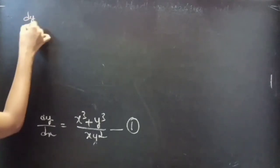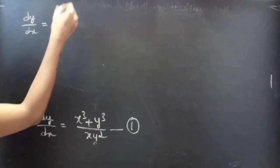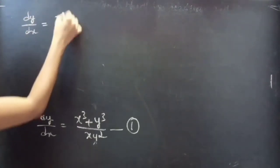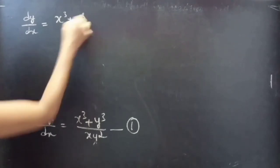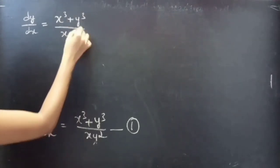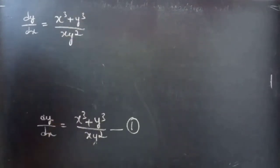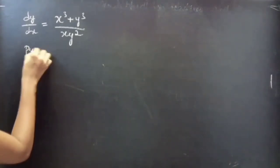We have dy/dx = (x³ + y³) / (x y²). Now put y = vx.